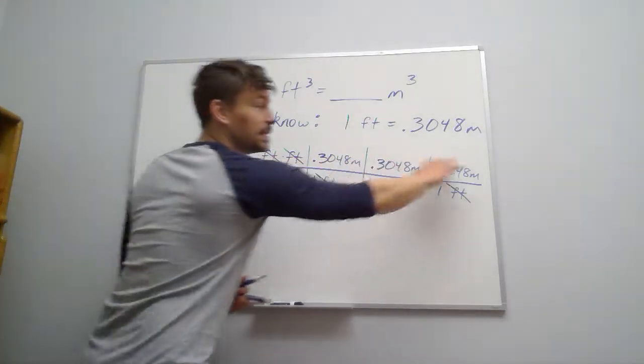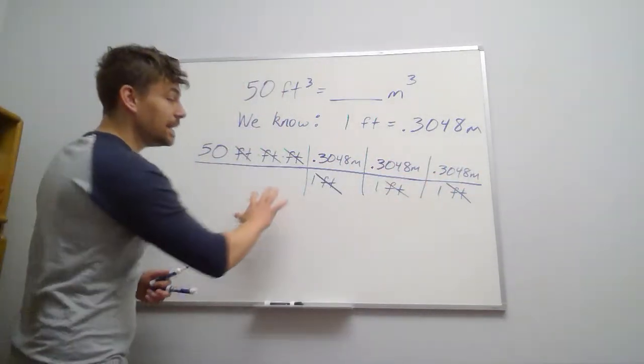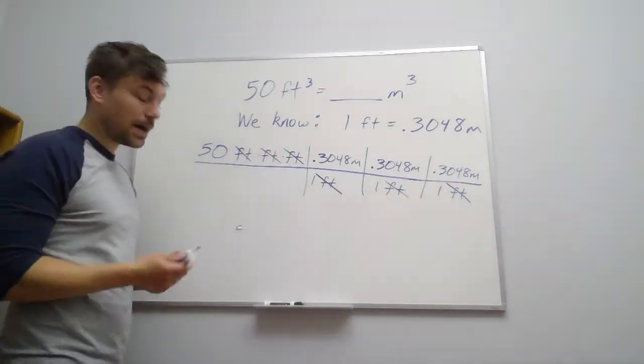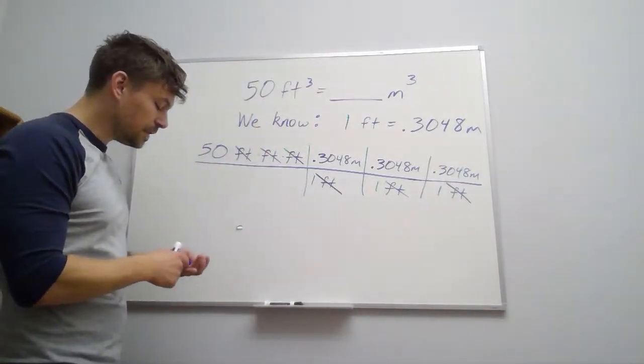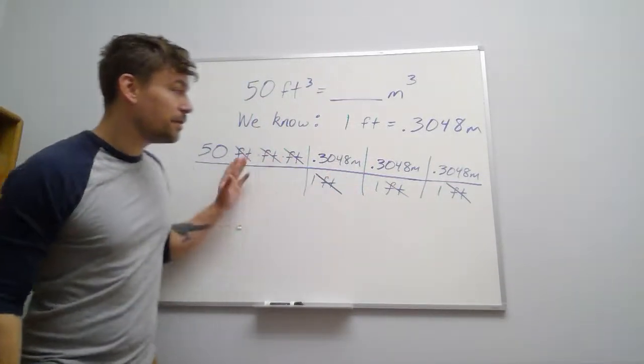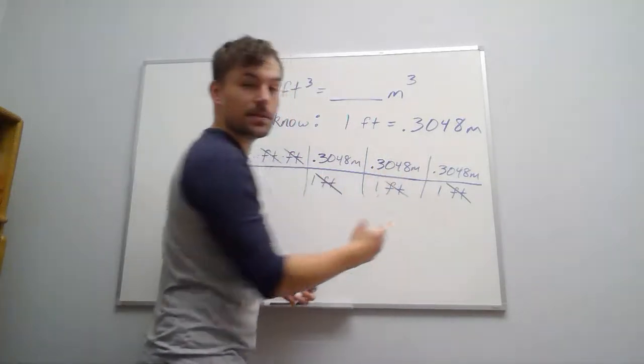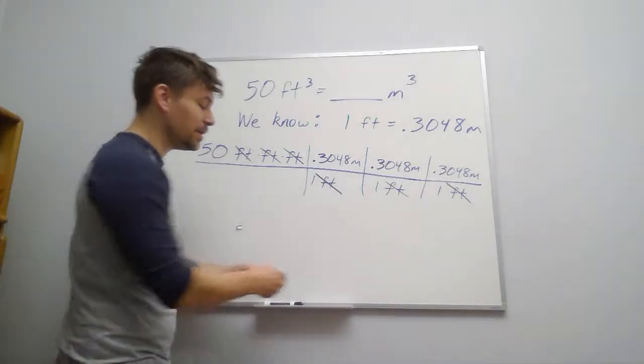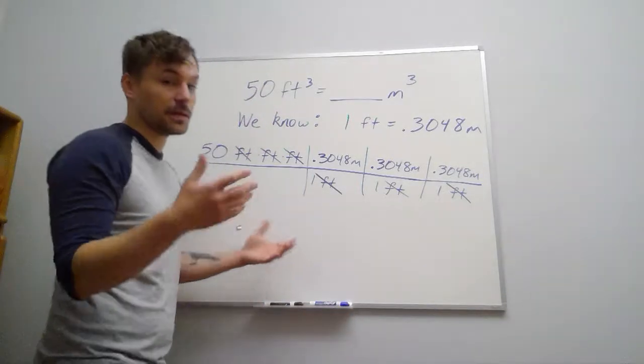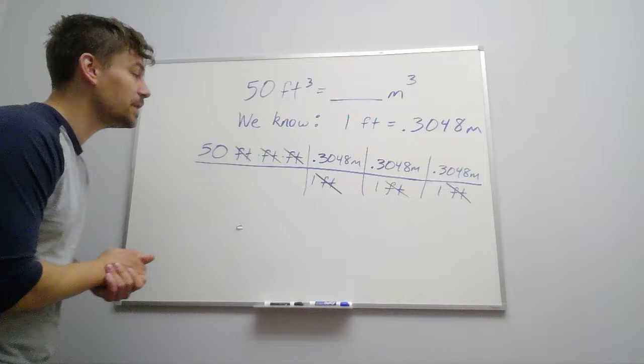And anything that's on the top, we're going to multiply, anything that's on the bottom, we're going to divide. So this is essentially a big fraction that we're working with. It just doesn't quite look like it. I like to segment like this, just for my own clarity. You might see this in things like chemistry when you're doing a lot of unit conversion.